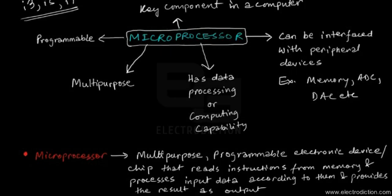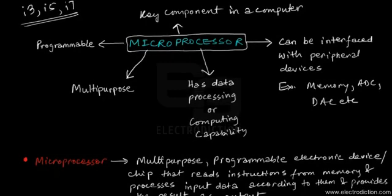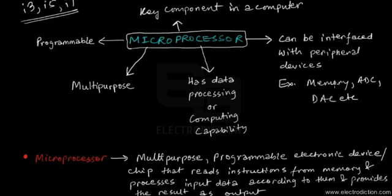It then provides a result as output. Its name contains two parts: 'micro' meaning small-sized, and 'processor' meaning a sort of electronic device that can process data — any kind of input data in binary form. It can be programmed using instructions, and different microprocessors have different instruction sets.